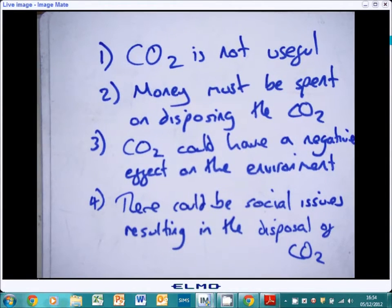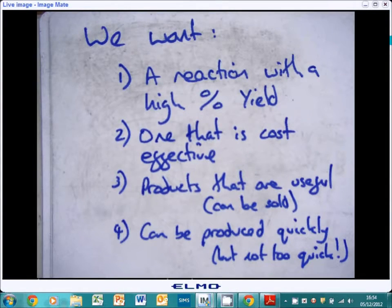So when we look at a chemical reaction, there are a couple of things that we want. Number one, you want a high percentage yield. You don't want much of a by-product. You want to know that if you put in 10 grams of reactant A and 10 grams of reactant B, you're going to get as close to 20 grams of your product as possible. You want one that's cost effective. You don't want one that's going to give you lots of waste, one that's going to cost a lot of money to make.